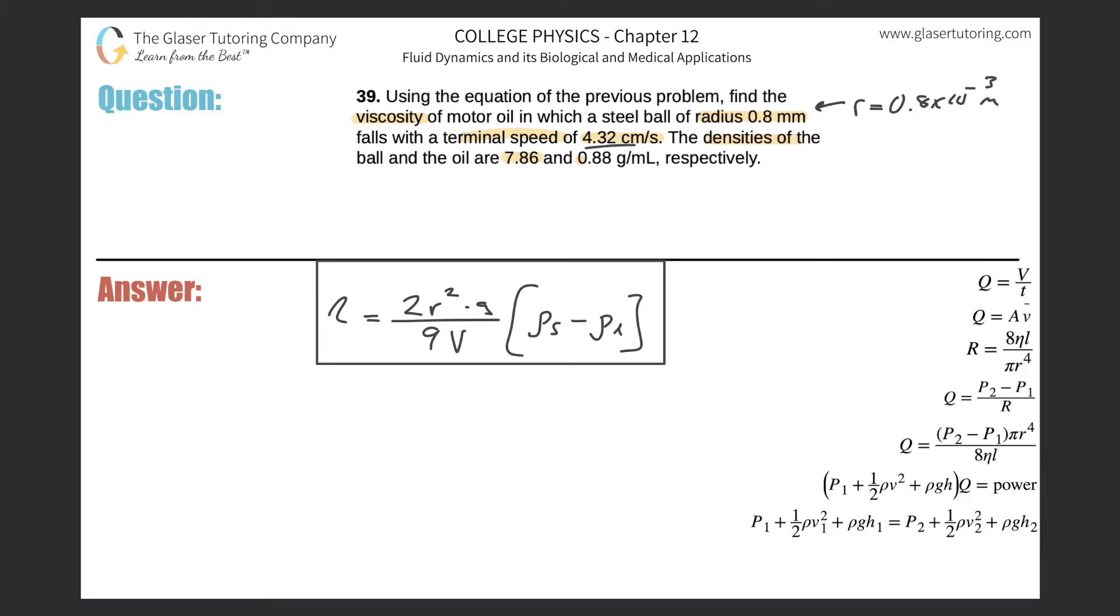And the terminal speed, it told us centimeters per second, and we need that in meters per second. So divide that value by 100. So it's going to be 0.0432, and that's in meters per second. So that is the velocity, the terminal velocity.